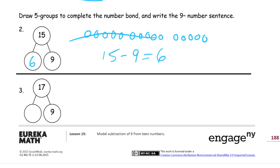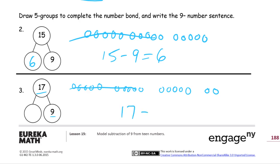Here we have 17 and a part of nine. We're going to cross out nine to find out what the rest of the part is. We draw 17 in five group rows and cross out nine. There's one left from the first two fives, and then we have seven and one more — that's eight. So 17 with nine crossed out leaves eight.